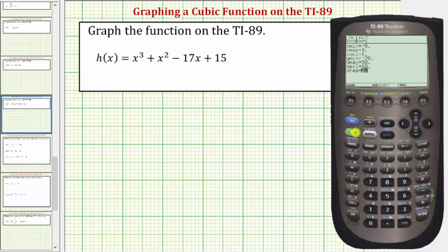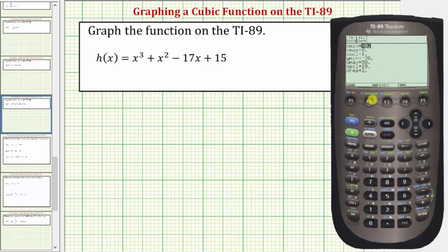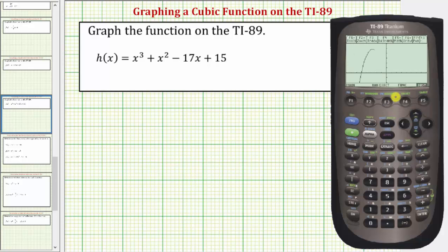Now let's look at the graph again by pressing diamond F3. Notice now we have a much better view of the cubic function. But let's increase the y maximum just a little bit more. I'm going to press diamond F2 for the window, scroll down to y maximum and change this to 60. It is common to have to come back to the window more than one time to make adjustments. Let's graph the function again by pressing diamond F3, and now we have a nice view of the cubic function.